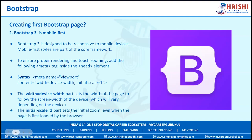The 'initial-scale=1' part sets the initial zoom level when the page is first loaded by the browser. Normally on a laptop an image appears much wider, but on a phone the content appears smaller. We keep the initial zoom level at 1 so that on larger devices it shows 100% width, and on phones it shows the minimum phone-size width.